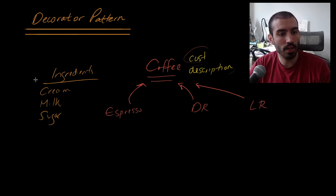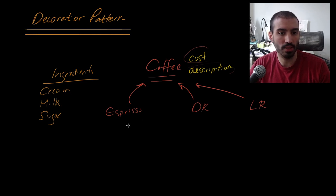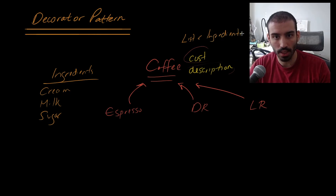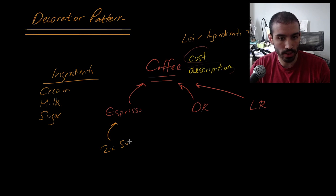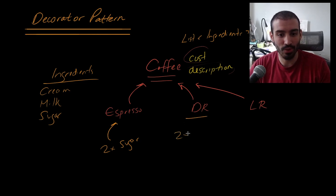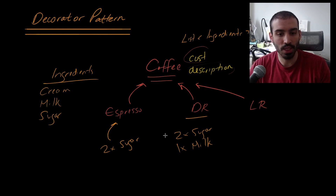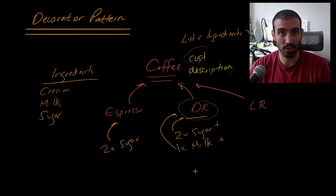One approach is to introduce a list of ingredients, where cream, milk, and sugar are each a different implementation with a different cost. When building an espresso object, you add things like 2x sugars, and for a dark roast you might add 2x sugar and 1x milk. You compute the cost as the base cost of the drink plus each ingredient. There's nothing inherently wrong with this classic inheritance approach, but you're going to get a class explosion as you add more ingredients and more beverage types.